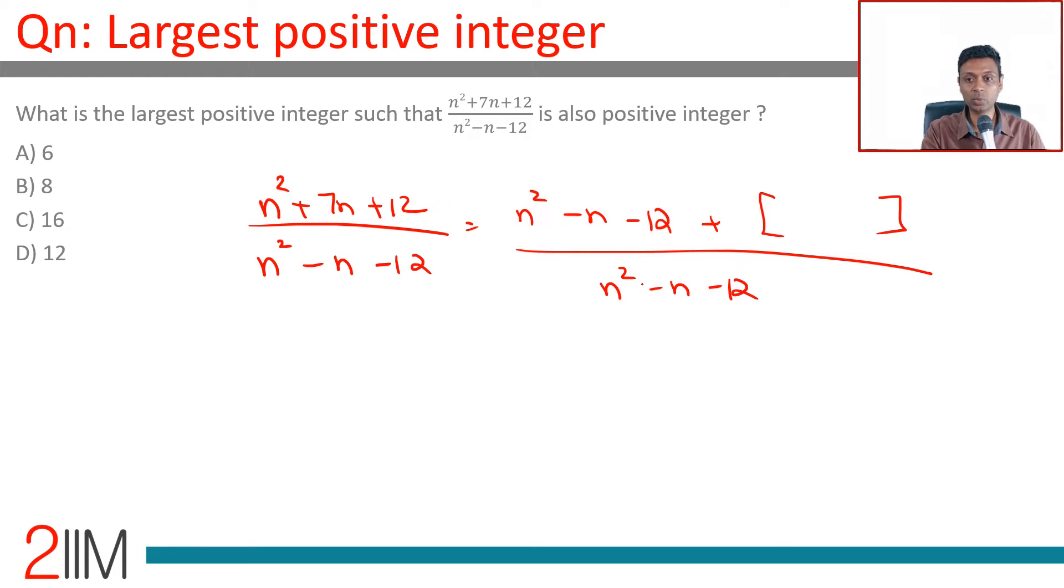Brilliant. Now, this works. What is the adjustment term? 8n plus minus n plus 8n is 7n plus 24. This becomes 1 plus 8n plus 24 by n square minus n minus 12.